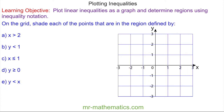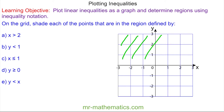So for question d, y is greater than or equal to 0. Well here is the line y is equal to 0 along the x-axis. And because it is greater than, all of these values of y make the statement true. So we can shade in this region and this line. And this is a full line because it can be equal to it.